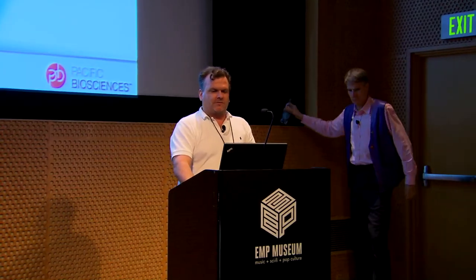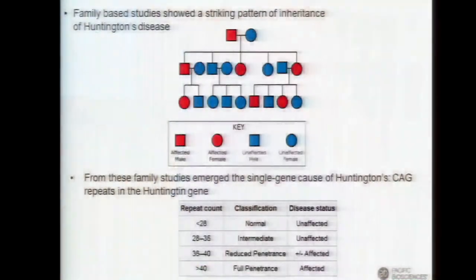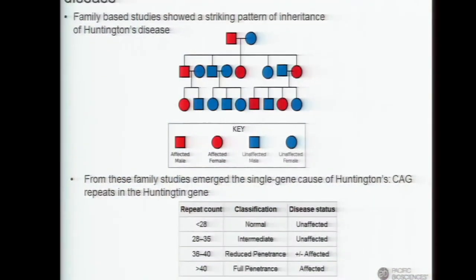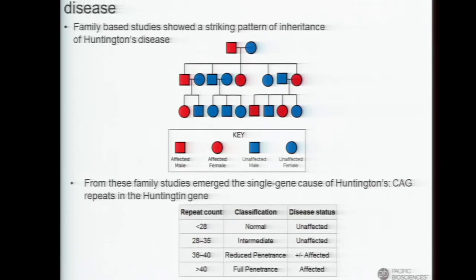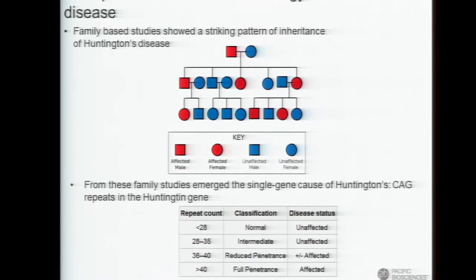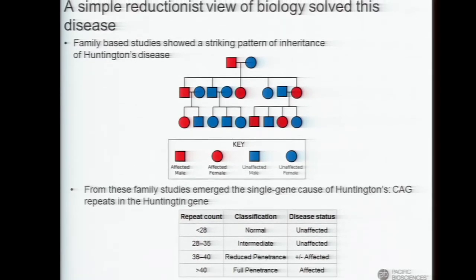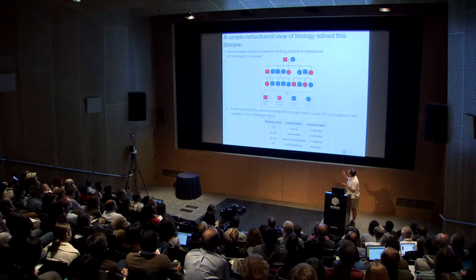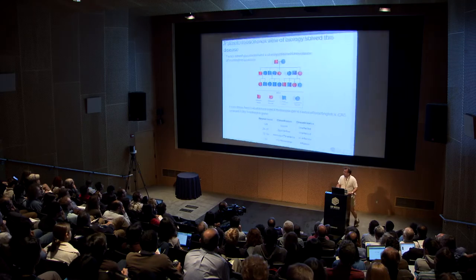It was a pretty straightforward disease to elucidate because there was a very strong genetic pattern of segregation in families. The ability to use straightforward family-based genetics to lock on to the Huntington's disease gene and figure that out was a really striking success of human genetics.